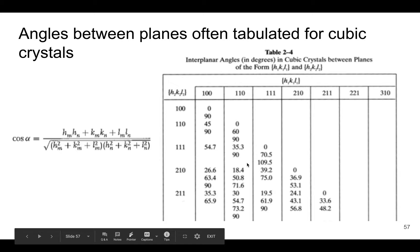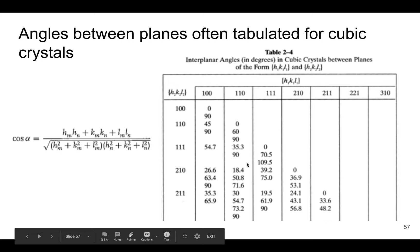Often we don't have to necessarily calculate each set of angles between planes in cubic systems. It's usually tabulated, and I've put a table here in the slides, Table 2.4, which basically shows the angles between various planes. If it's in the table, you can feel free to use that.